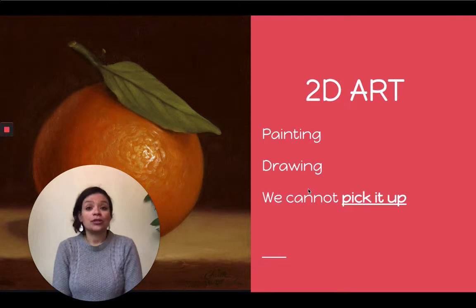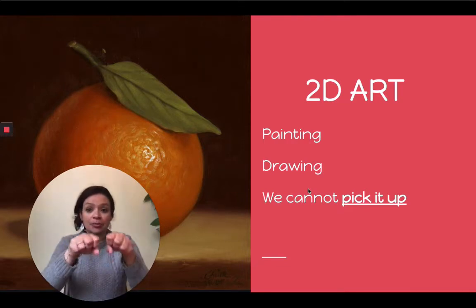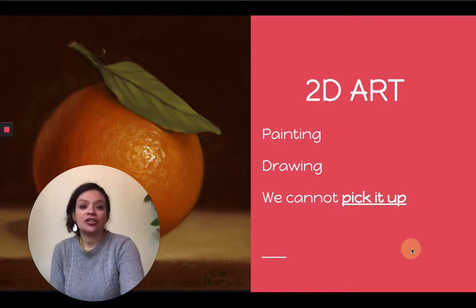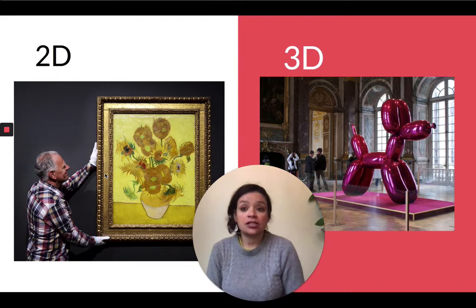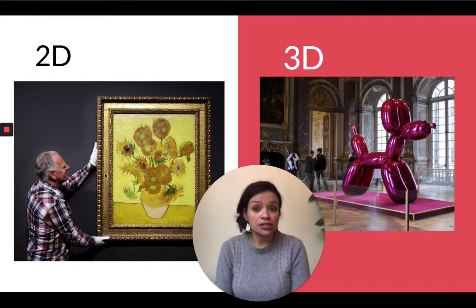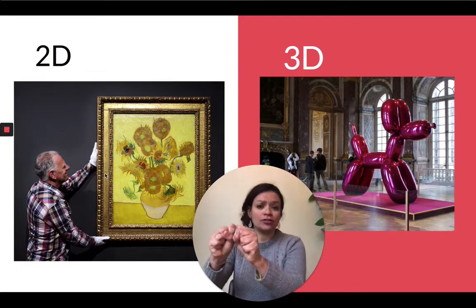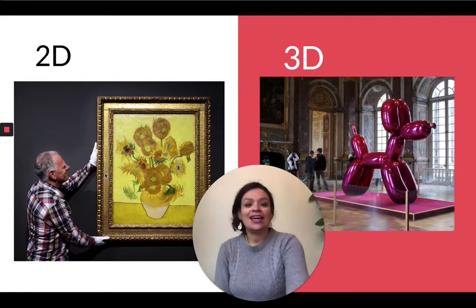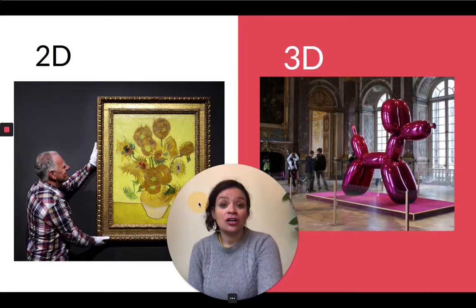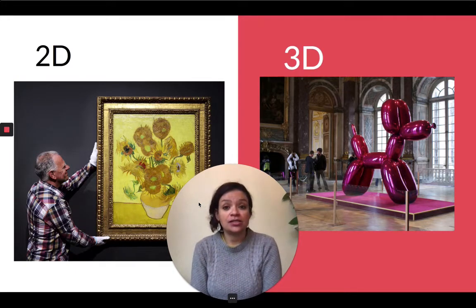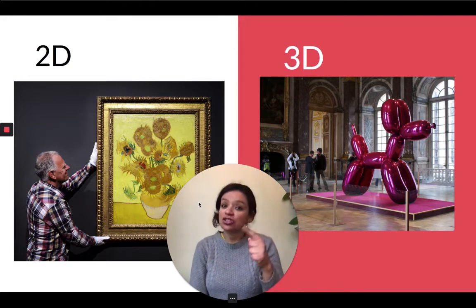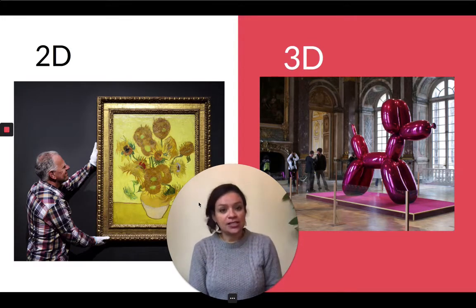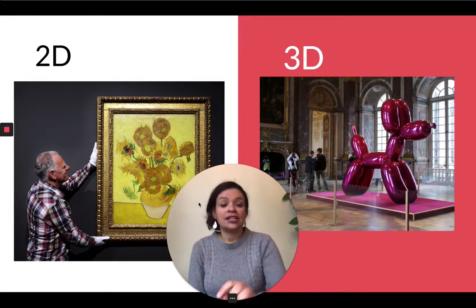2D art is usually paintings and drawings, and we cannot pick up what's in the painting. Here on the left, we have 2D art — a painting of sunflowers on canvas hanging on the wall. We cannot hold or touch the flowers. And on the right-hand side, you have a picture of a sculpture at a museum — a very famous sculpture that looks like a dog made of balloons, but it's really big. The people in the museum can actually walk around it and see all the sides. This is 3D art — sculptures.